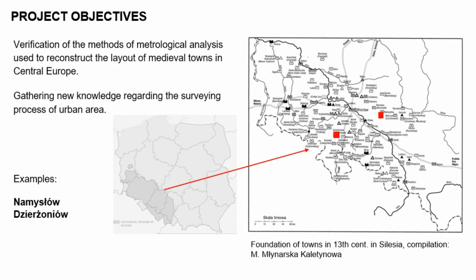To explain the main idea of the project, imagine that you are a surveyor hired to plan a new town in the middle of nowhere, using only a rope and stick. The effect of your work will be visible after hundreds of years, and people using available methods and new technologies will verify how accurate you have been. This is exactly what this project is about. It is concentrated in the Silesia region, shown on this slide, and these two methods will be analyzed on two case studies: the towns of Namysłów and Dzierżoniów.